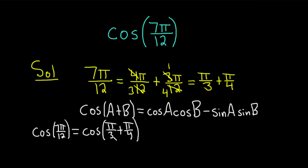And you can see through matching that a is going to be π over 3 and b is going to be π over 4. This is equal to the cosine of π over 3 times the cosine of π over 4.